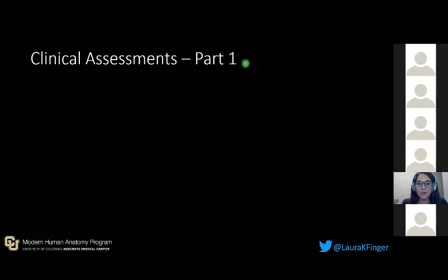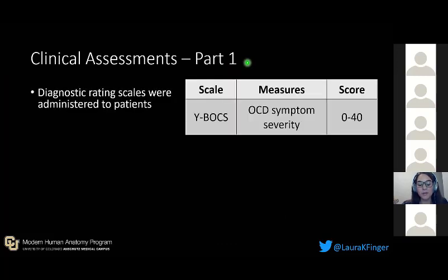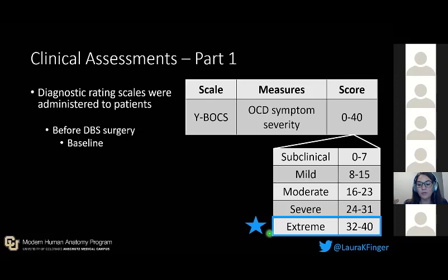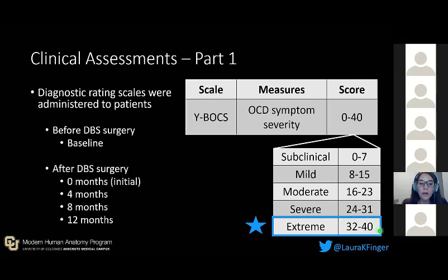The first component is the clinical assessments. Diagnostic rating scales are administered to patients, and the main scale we focused on was the YBOCS score, which measures OCD symptom severity and ranges from 0 to 40. I look at these scores before DBS surgery to get a baseline — all of our patients are within the extreme category — and then I look at those scores after surgery at four different time points.